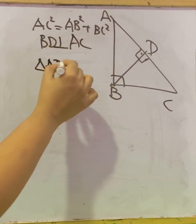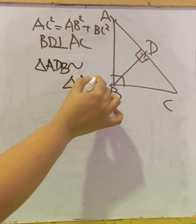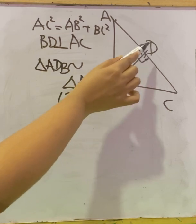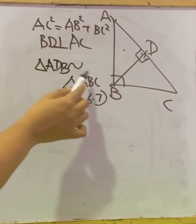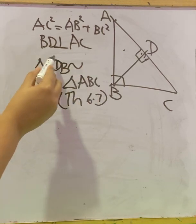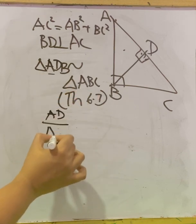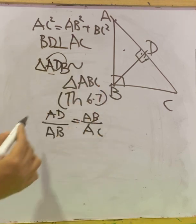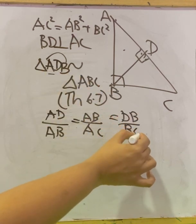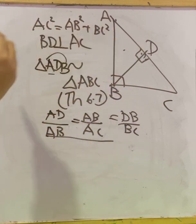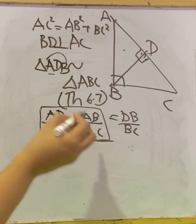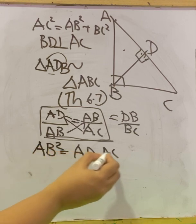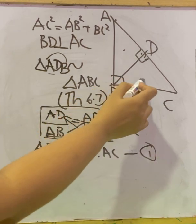Triangle ADB is similar to triangle ABC according to the previous theorem — Theorem 6.7. If these two triangles are similar, we can write the sides in proportion: AD/AB = AB/AC. Cross multiplying gives us AD × AC = AB², which is our first equation.